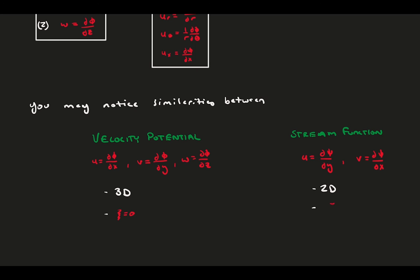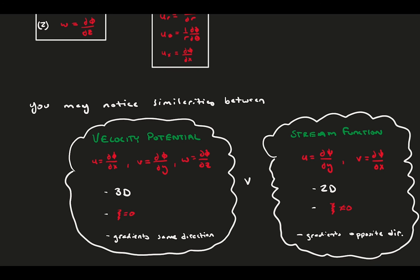However, the velocity potential requires the assumption of irrotational flow, where we can use the stream function in flow with vorticity. And last, both functions get you the velocity field by taking some spatial gradients, where you take gradients in line with the velocity for phi, and you take gradients perpendicular to the velocity direction with psi.